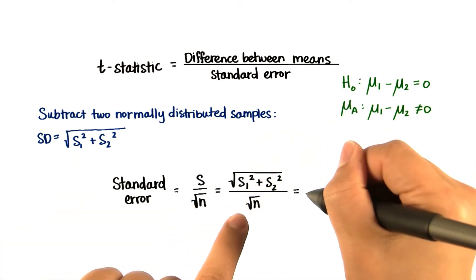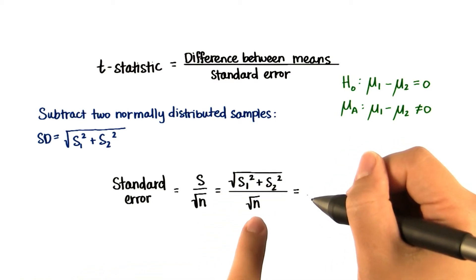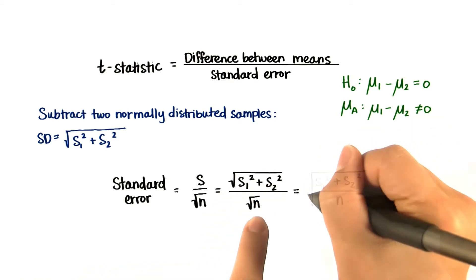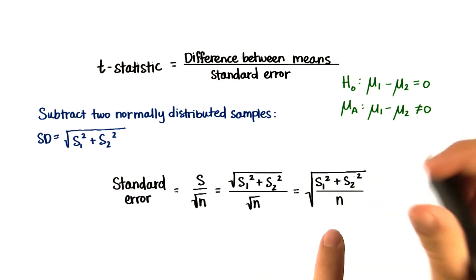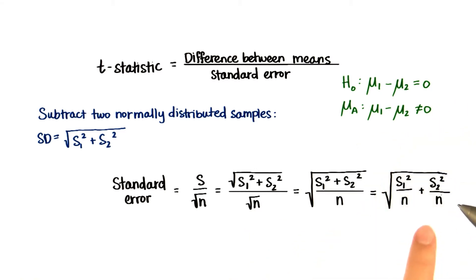Then we can rewrite this, since both the numerator and denominator are under the radical sign. We can say it's the same as this. And finally, we can rewrite it like this.